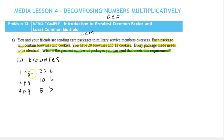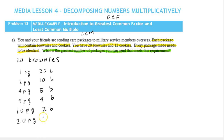Notice all our factor pairs: 1×20, 2×10, 4×5. We can switch these around since they represent number of packages versus brownies per package. So we could have five packages with four brownies each, ten packages with two brownies each, and twenty packages with one brownie each. These are all the ways to break up the brownies so each package has the same amount.